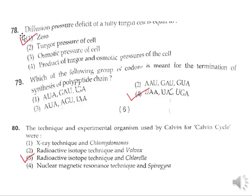MCQs from MSc Botany BHU exam 2016, Part 2. Question 78: Diffusion pressure deficit of a fully turgid cell is equal to zero. When the cell is fully turgid, water will be filled in it. So the correct answer is option 1.